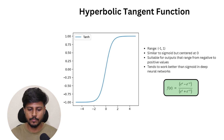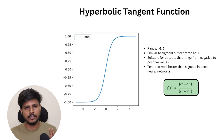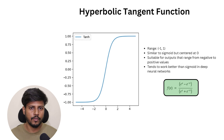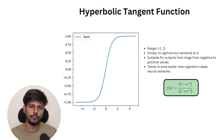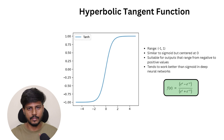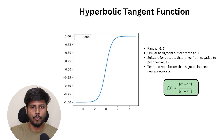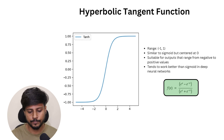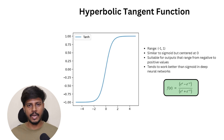Compared to the sigmoid function, tanh has several advantages and disadvantages, but it is generally more capable of modeling more complex patterns than the sigmoid activation function.